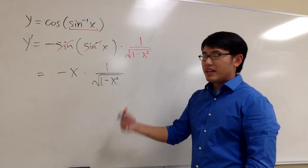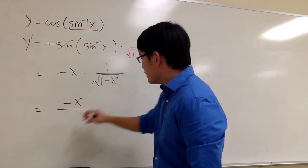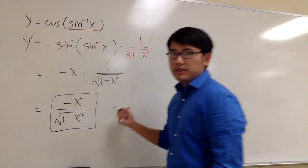And of course, we can put them together. The final part is just you put the negative x on the top over the square root of 1 minus x squared on the denominator. And this right here is the answer.